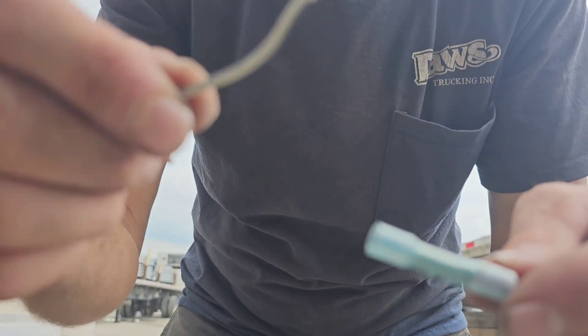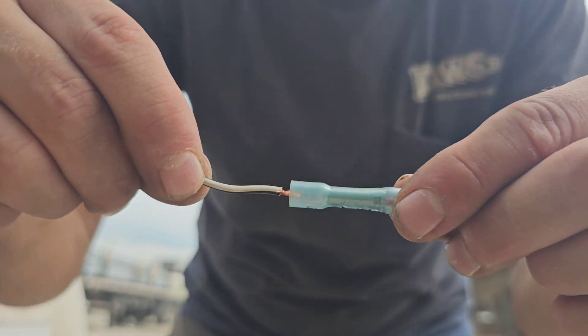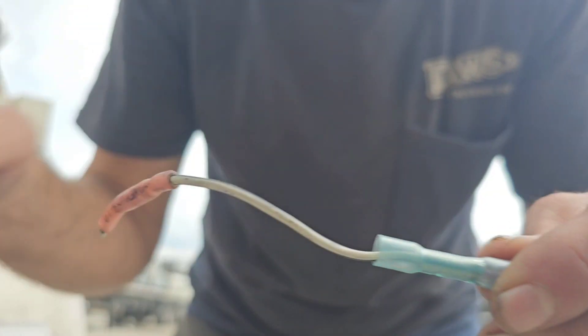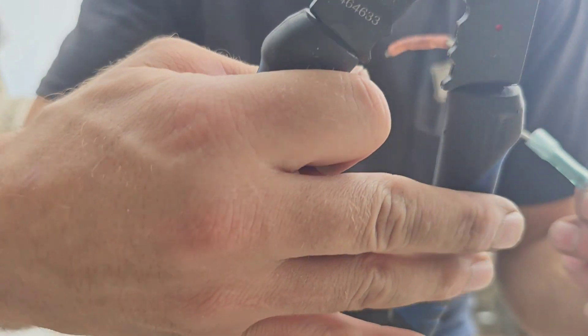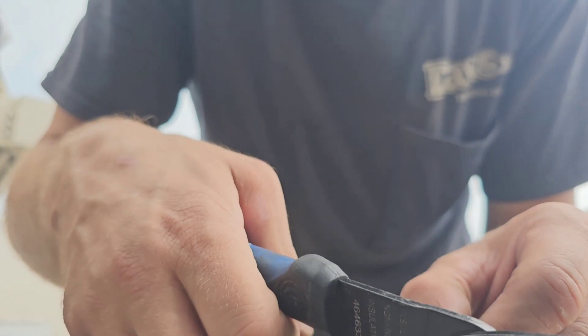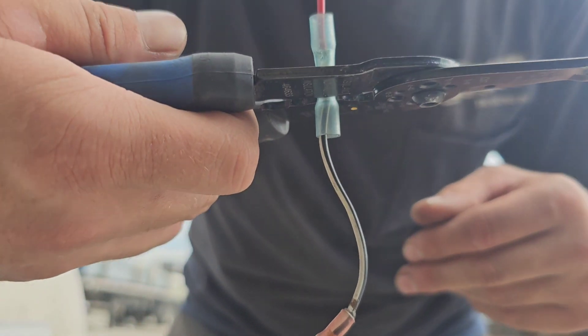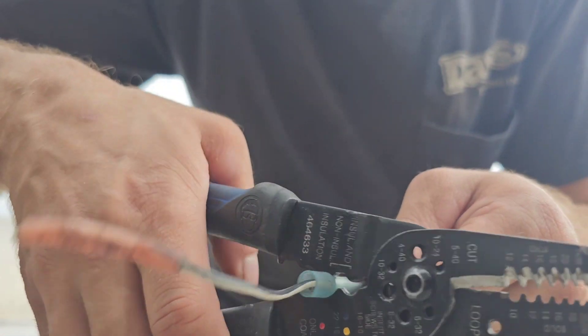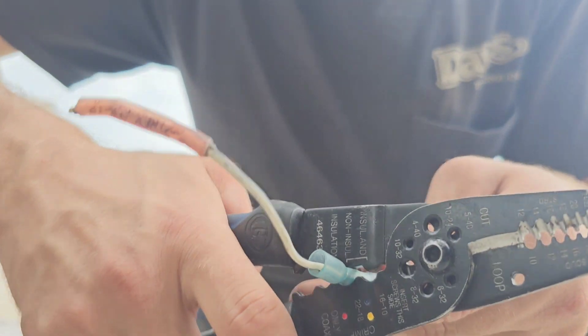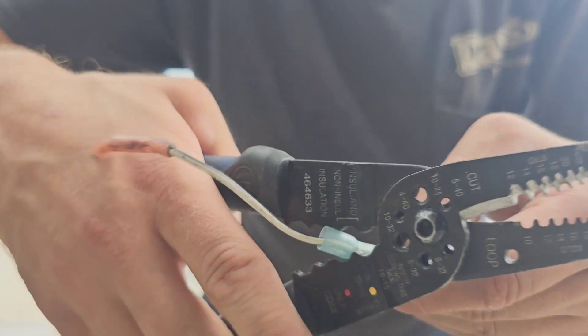I already have this one exposed, so we just mash that in there. Take your crimpers and make sure you get it on the metal part, not just this insulation. You can put a couple more crimps in there just to be sure it's really tight - super strong connection.